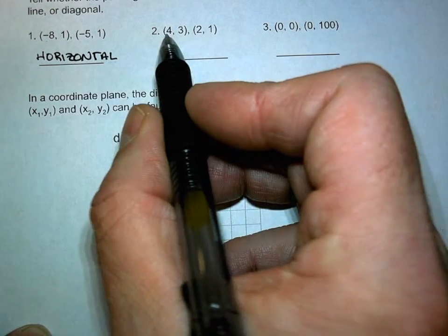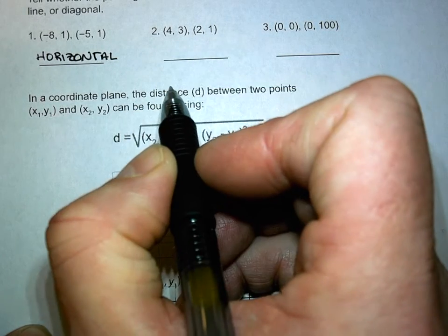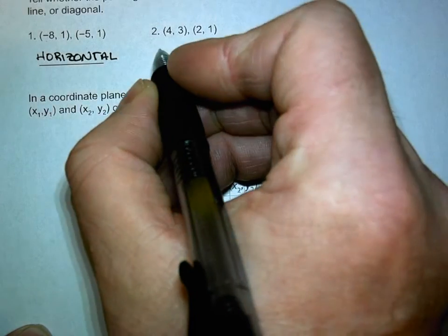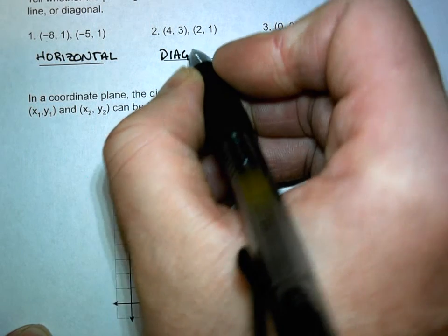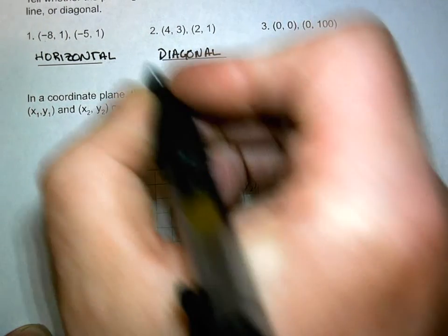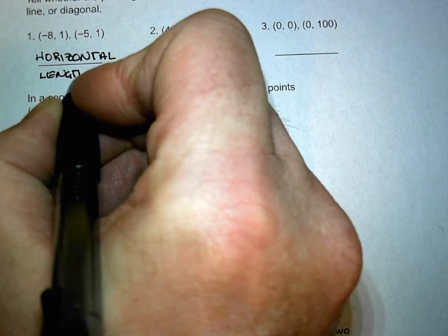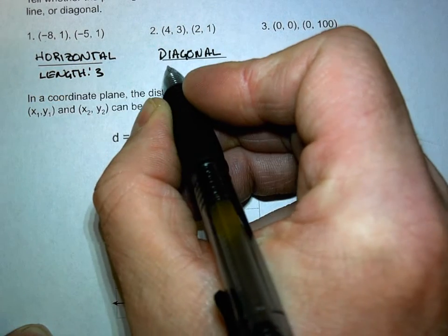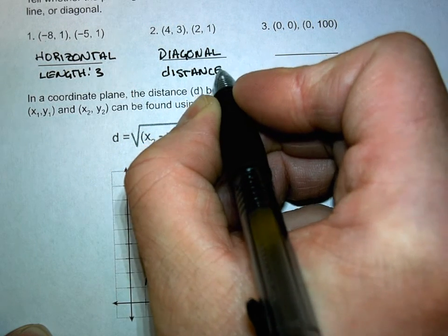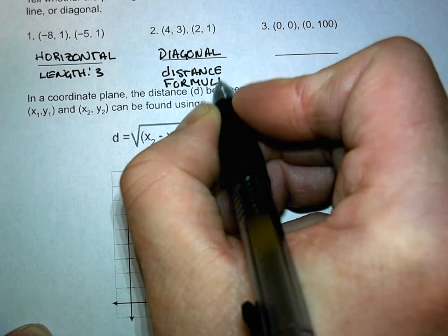Let's look at this one here. Are the X the same? No. Are the Y the same? No. What kind of line is it? Is it vertical, horizontal, or diagonal? Diagonal. It is diagonal. Now for this one, we'd use something called the distance formula, and we're going to get to that in a moment. That'll give us the length here. I forgot over here. The length is 3, right? This one, we'd use the distance formula.